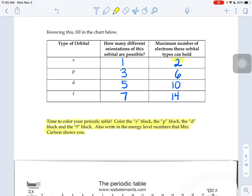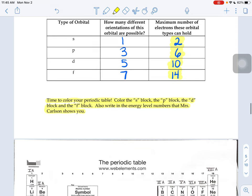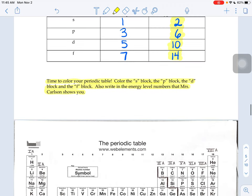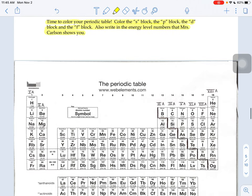So when we look at these numbers, 2, 6, 10, and 14, and then I take a look at the periodic table. So keep those numbers in mind, 2, 6, 10, and 14.